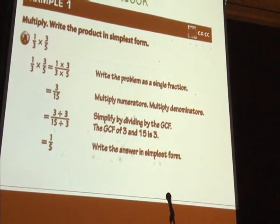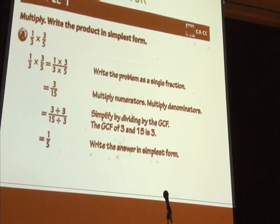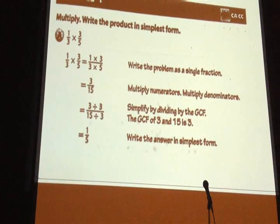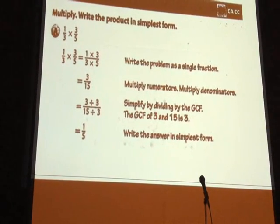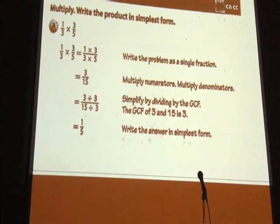It said, if you want to multiply one-third times three-fifths, you put them next to each other, you take the two numbers on top, you put those on top on a new fraction, you take the two numbers on bottom, you put them on the bottom of a new fraction, you multiply the two numbers on top, you multiply the two numbers on bottom, and now you multiply two fractions.